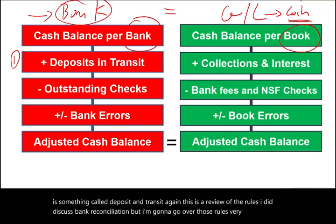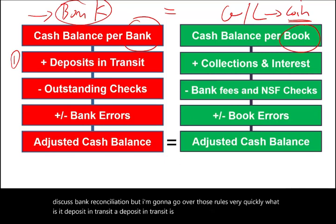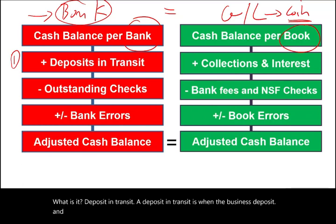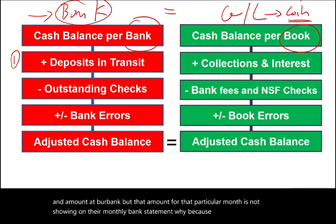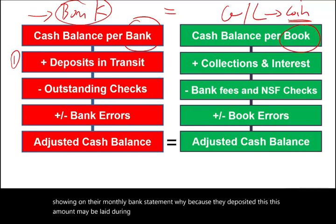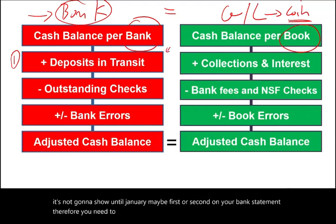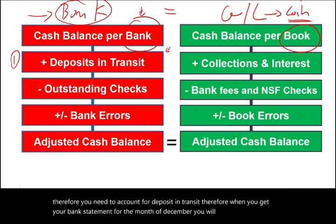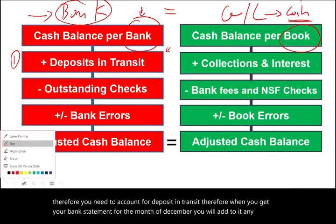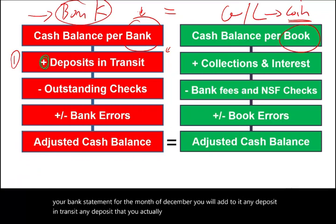A deposit in transit is when the business deposits an amount at their bank, but that amount for that particular month is not showing on their monthly bank statement. Why? Because they deposited this amount maybe late during the month. For example, you deposited something December 31st — it's not going to show until January 1st or 2nd on your bank statement. Therefore, when you get your bank statement for December, you will add to it any deposit in transit, any deposit that you actually deposited in the bank but is not showing.